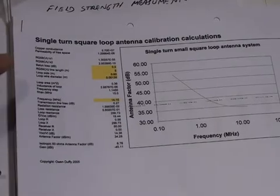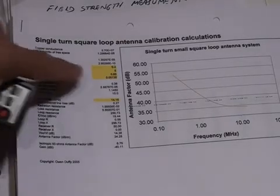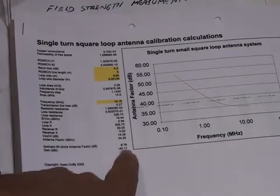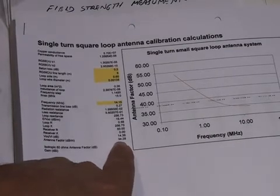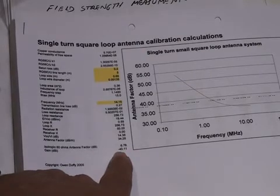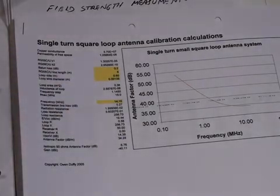Here is an example of the printout from his Excel spreadsheet which shows the various input parameters and the resulting graph and figures. For example, the loop I built has an antenna factor of 34.28 dB/m and a gain of minus 40.11 dBi. The wire I used was 0.00135 meters or 1.35 millimeters in diameter.